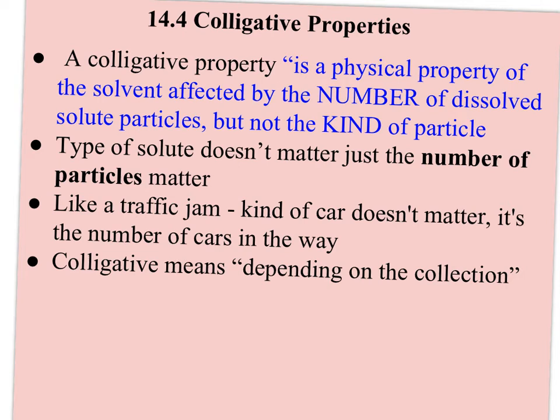Welcome. This video is going to define colligative properties and take a look at four of the common colligative properties that chemists are interested in. A colligative property is a physical property of the solvent that's affected by the number of dissolved solute particles, but not the kind of particle. Mixtures can change the physical properties of the solution, but not the chemicals. The type of solute doesn't matter — just the number of particles.